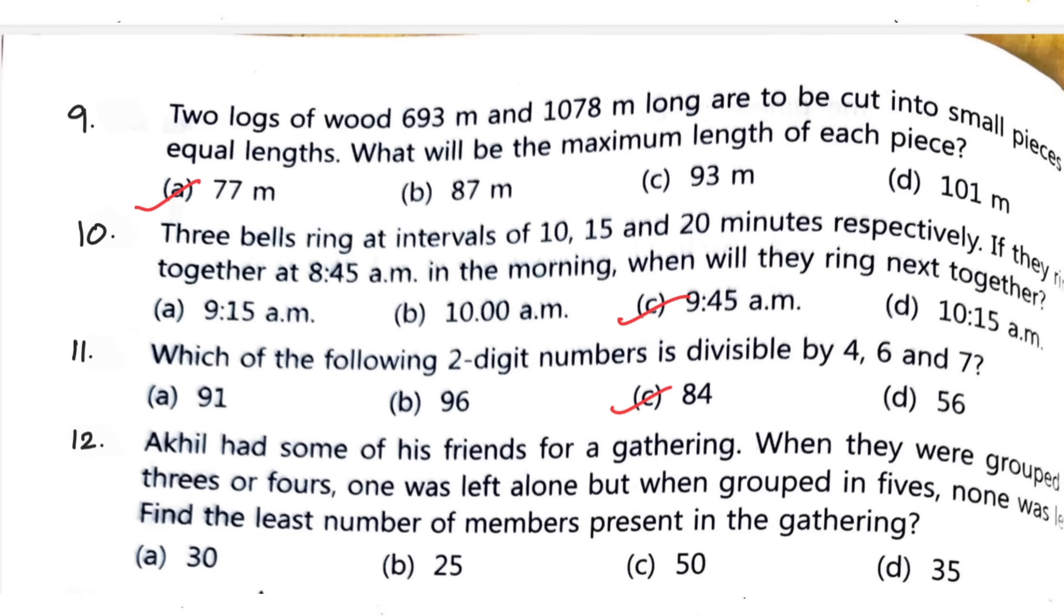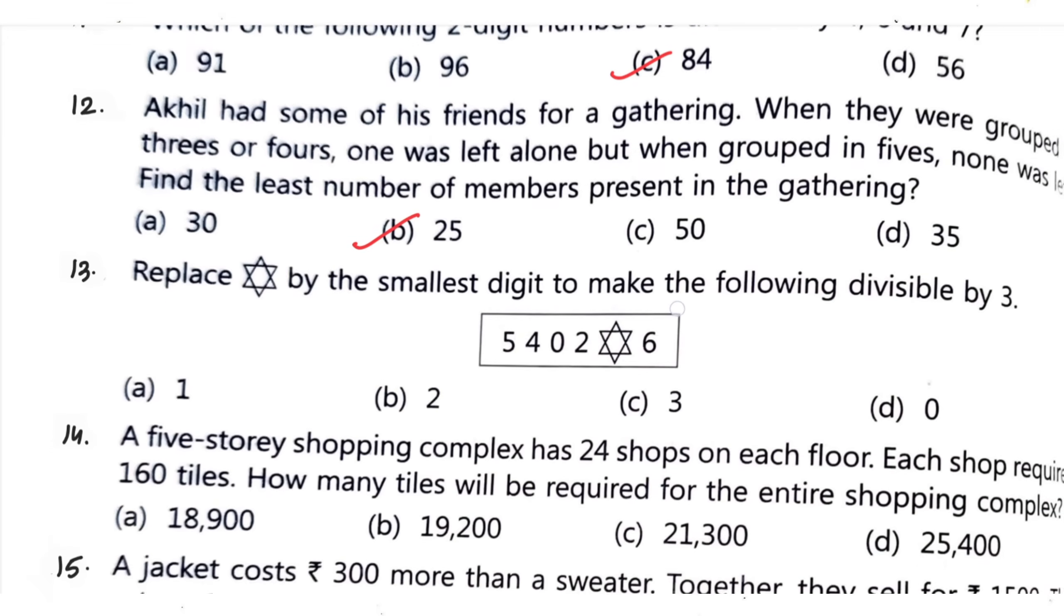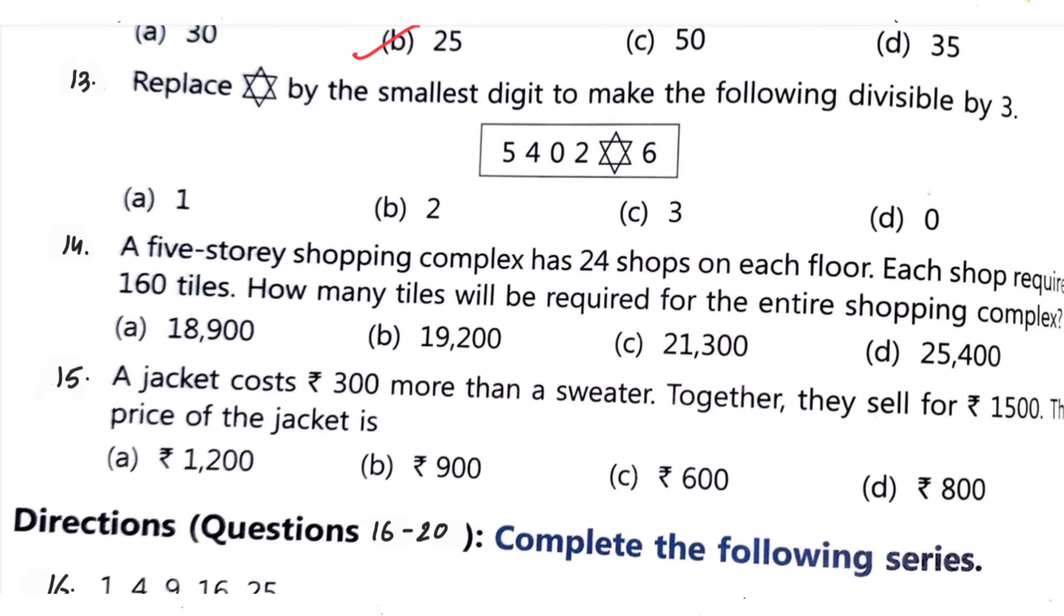Question number 12: Akhil had some of his friends for a gathering. When they were grouped 3 or 4, one was left alone, but when they grouped in 5, none were left. Find the least number of members present in the gathering. Your correct option is option B, 25. Question number 13: replace star by smallest digit to make the following divisible by 3. Your correct option is option A, 1.